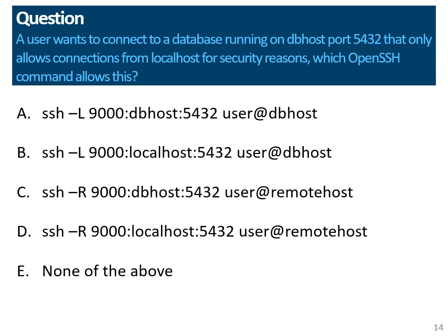To make sure everyone understands, here is a question about port forwarding. A user wants to connect to a database running on a remote host called dbhost on port 5432. However, this remote host only allows connections to its database that originate from localhost for security reasons. Which OpenSSH command can you use to allow connecting to this database remotely? There are four possible SSH commands — two using local port forwarding and two using remote port forwarding — plus the option that none of them will work. Feel free to pause the video if you want to think about the question.